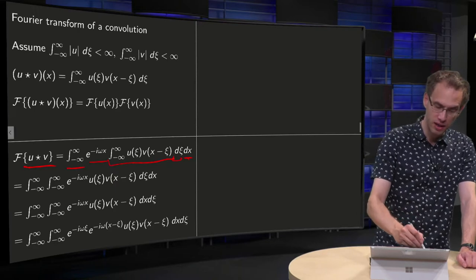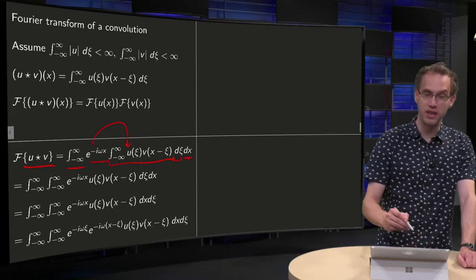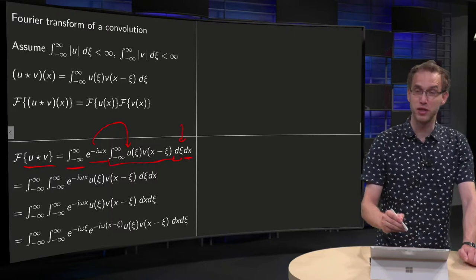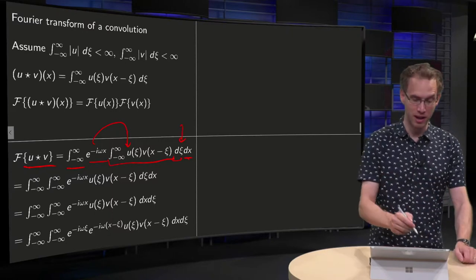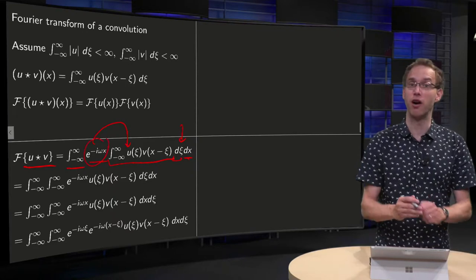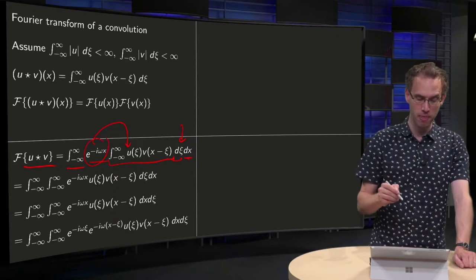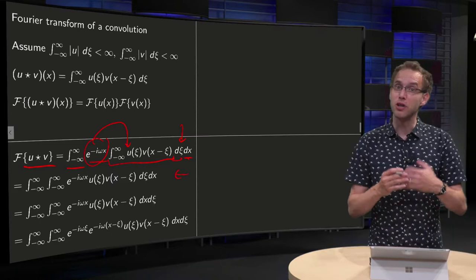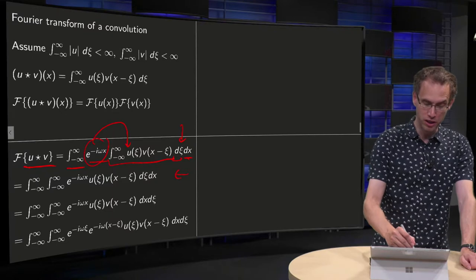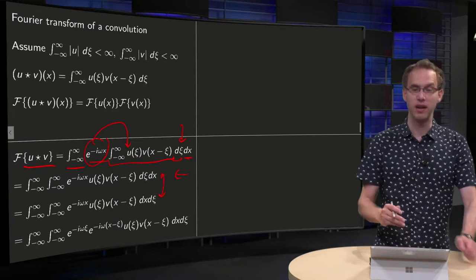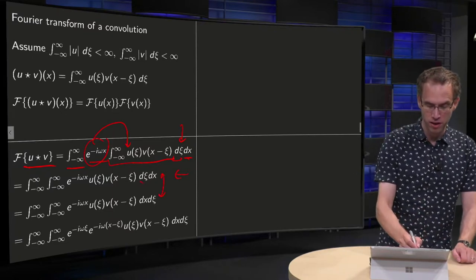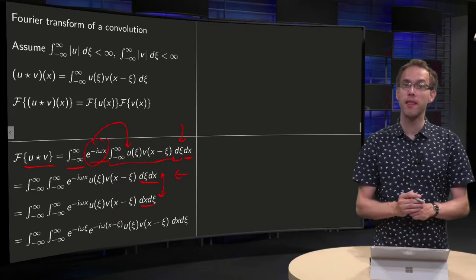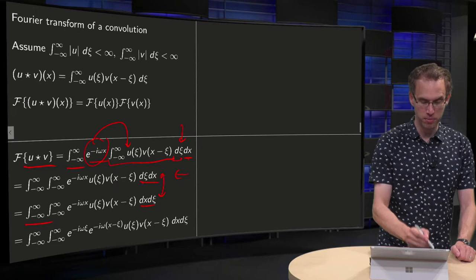Now we can simplify this integral a bit, because we can take this e to the power minus i omega x as a constant with respect to psi, and then we are in the second step. Now we can use the Fubini theorem, interchange the order of integration, like that, so instead of dx, we get dx, dx, dx and the integration boundaries remain the same.